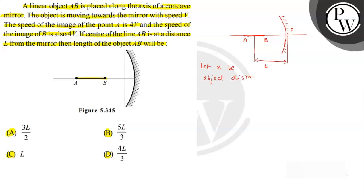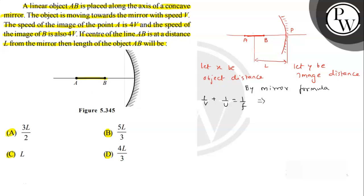Let x be the object distance — whether it is for A or B — and let y be the image distance. By the mirror formula, we can write: 1/v + 1/u = 1/f. If we differentiate this expression with respect to time, substituting y for image distance and x for object distance, we get: minus y² (dy/dt) minus (1/x²)(dx/dt) equals zero, since focal length is constant.